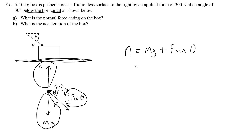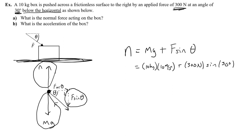We have enough information to solve this. n = 10 kg × 10 m/s² + 300 N × sine(30°). That's 100 plus 150, which equals 250 newtons. That is the answer to part A — the normal force on the box.